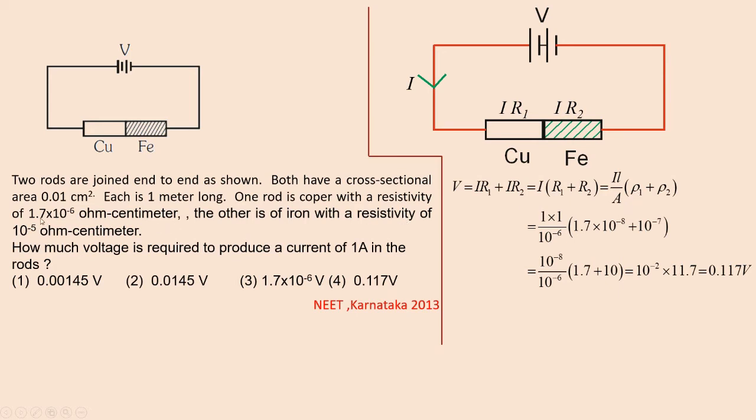ρ₁ is given as 1.7×10⁻⁶ ohm-centimeter. So in units of ohm-meter, it will be 1.7×10⁻⁸. You have to multiply this by 10⁻². So 1.7×10⁻⁸ ohm-meter for this copper.